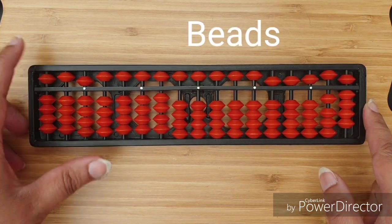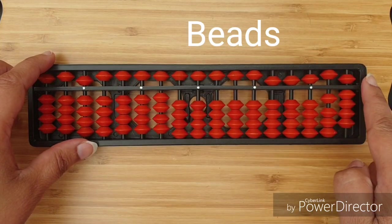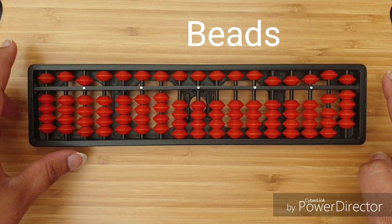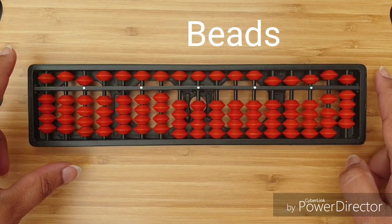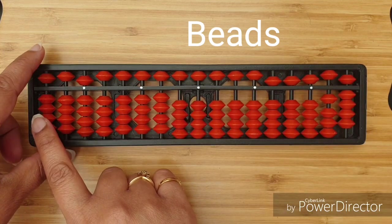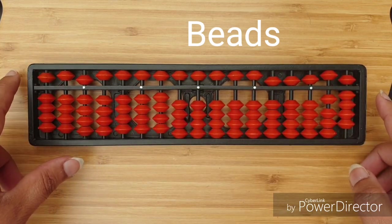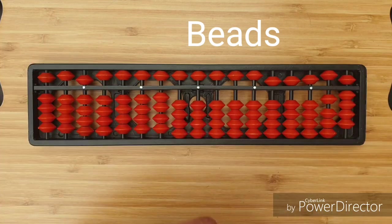Beads. In upper section, we have one bead in each rod. While in the lower section, we have four beads on each rod.